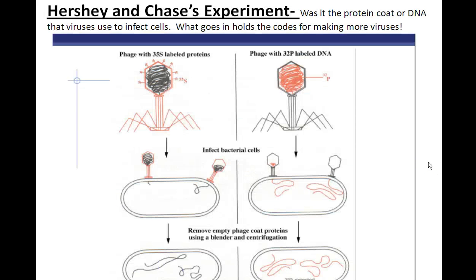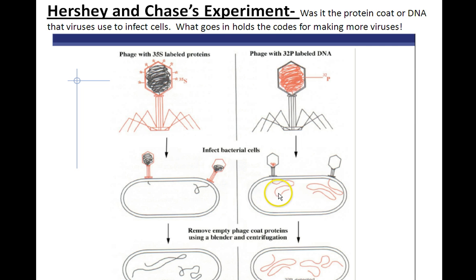The next experiment to know is the Hershey and Chase experiment. Viruses infect cells and somehow create new viruses within the cell. At the time, we didn't know what coded for making new viruses. The experiment involved having a radioactive protein coat to figure out if it was the protein coat going inside the bacterial cells or the DNA that was infecting the cells. If the protein coat held the genetic information, you should have found radioactivity inside the cells. However, no radioactivity was found inside the cells.